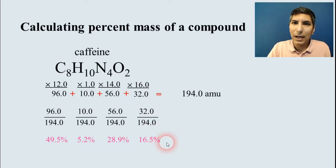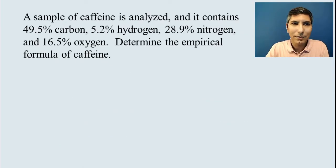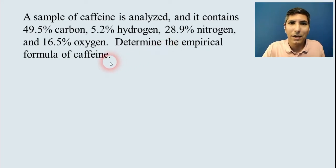Now, is it possible for us to go in the other direction? Is it possible for us to take these percents and work backwards and get back to a formula? Well, I think it is. Let's see how we do that. Let's take those percents that we just calculated and we're going to go backwards. We're going to determine the empirical formula of caffeine.